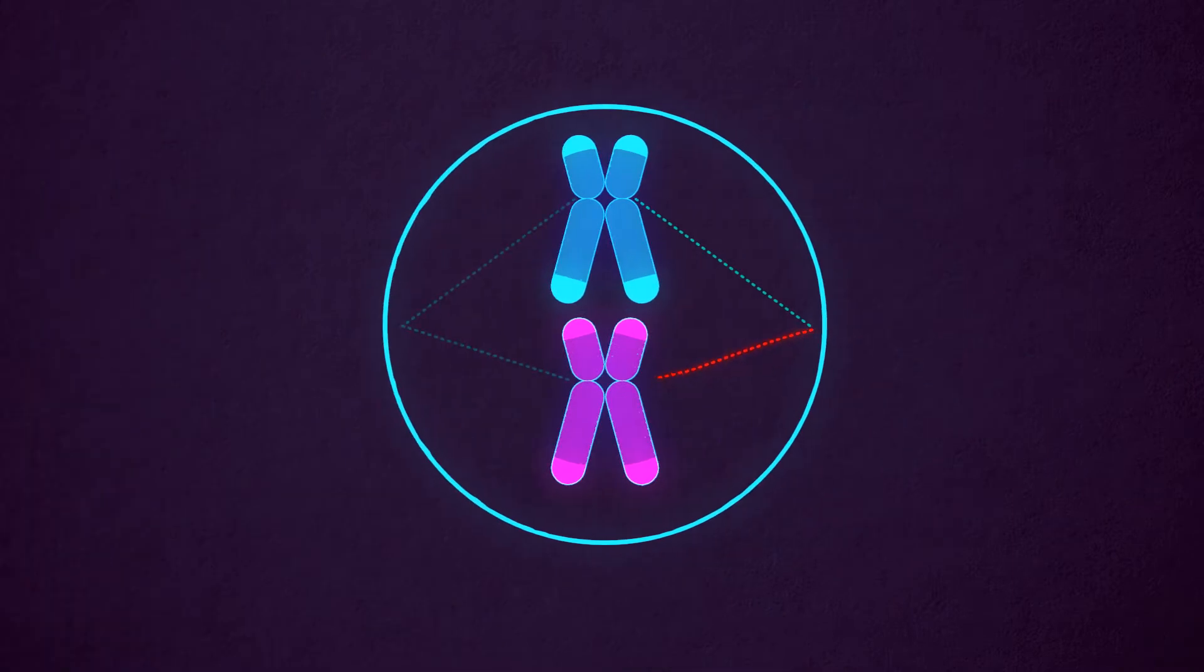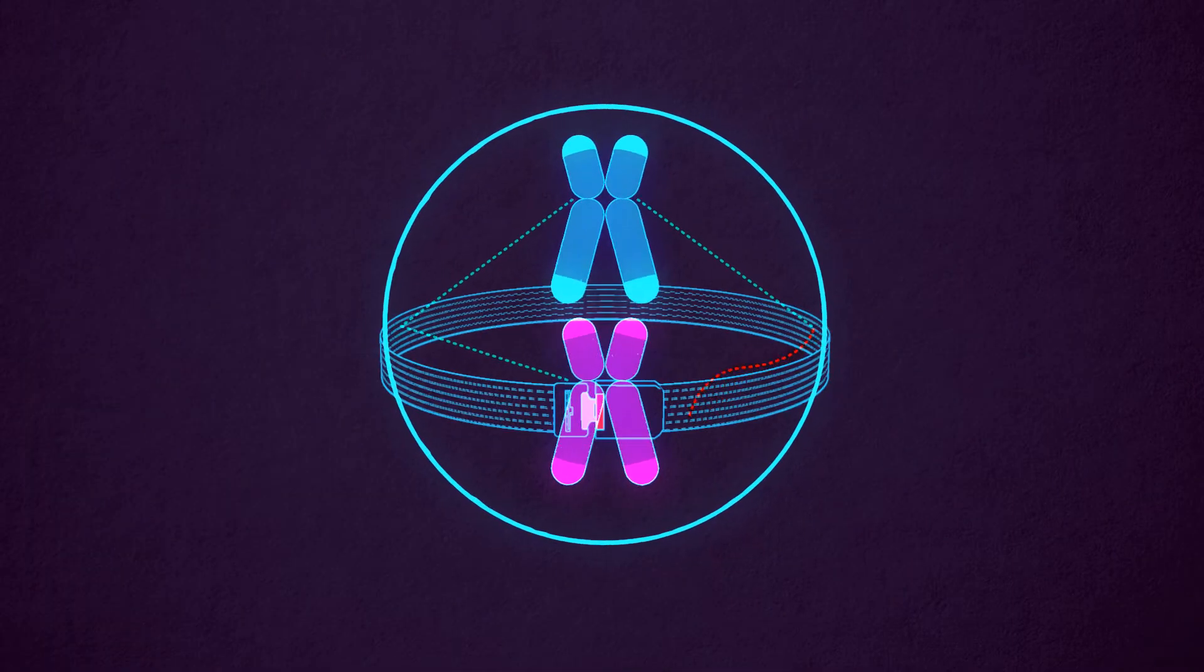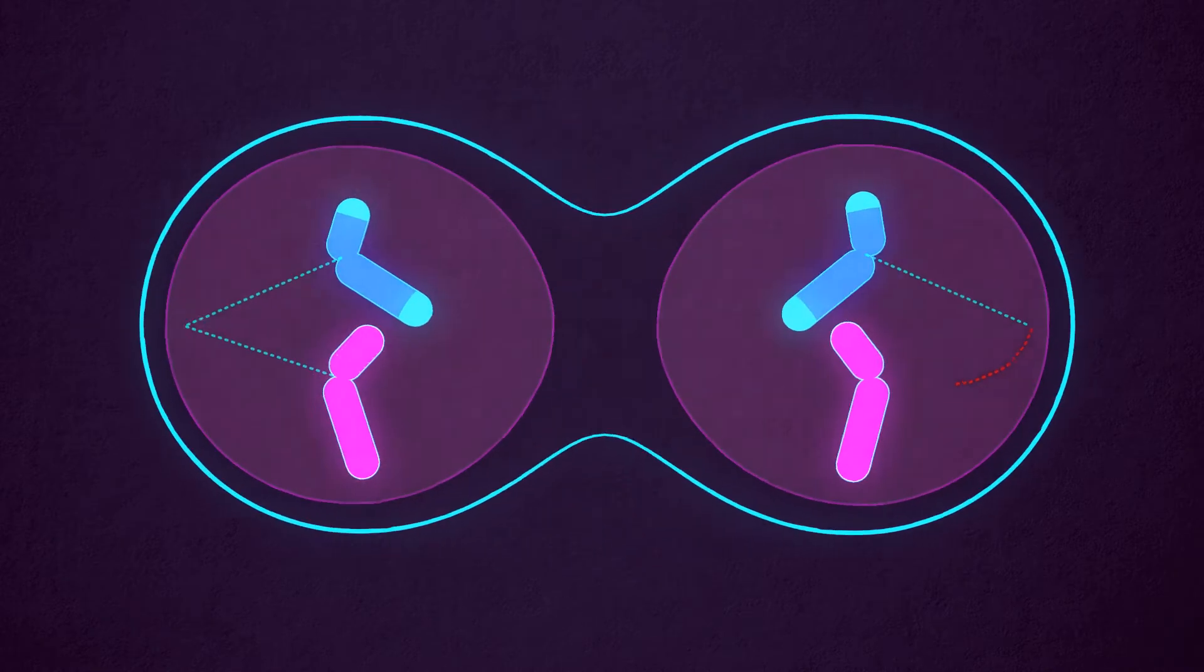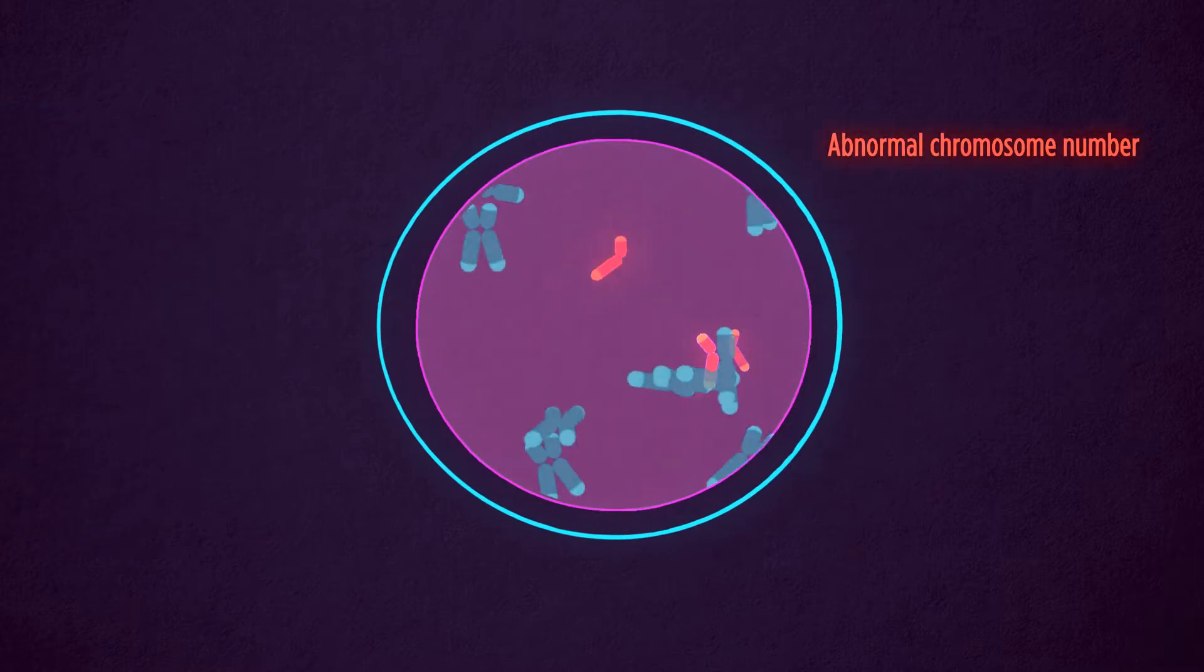One unattached or improperly attached centromere will block cell division. Defects in this molecular mechanism will give us two cells with an abnormal chromosome number. These cells are called aneuploid.